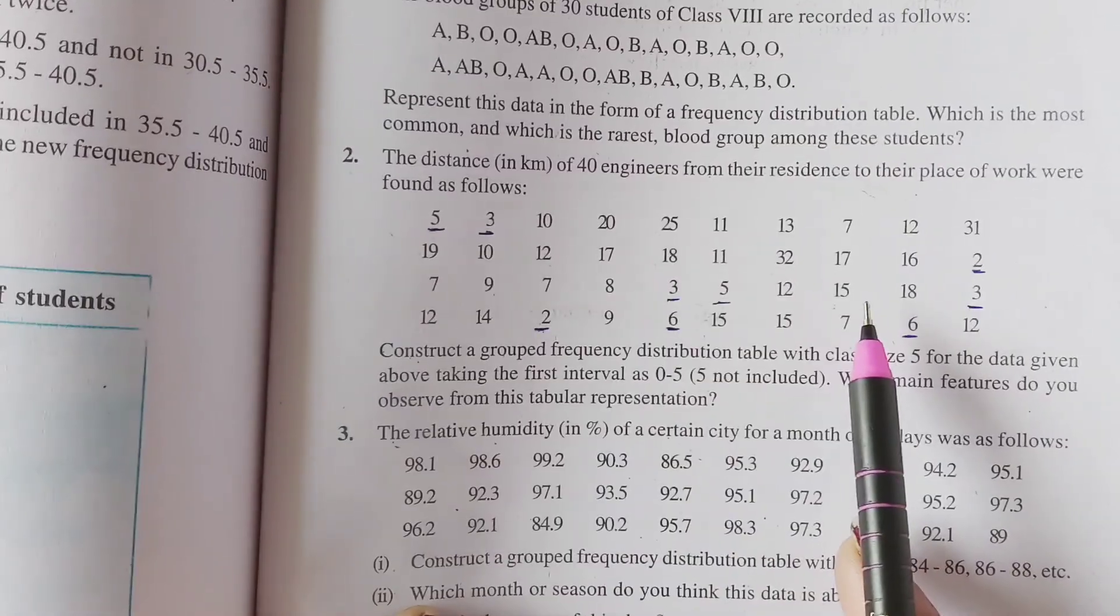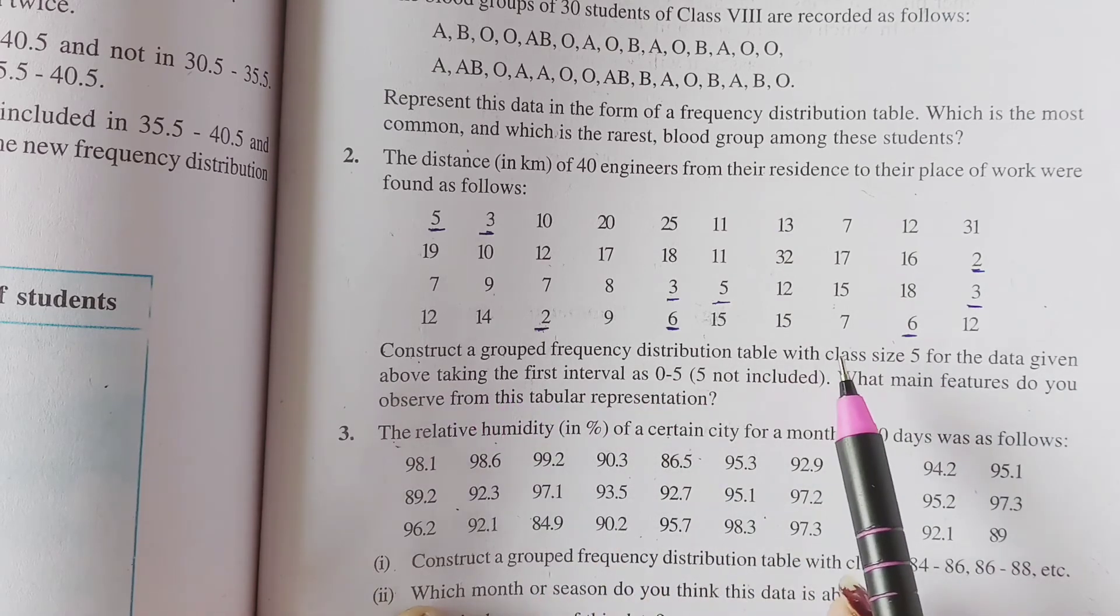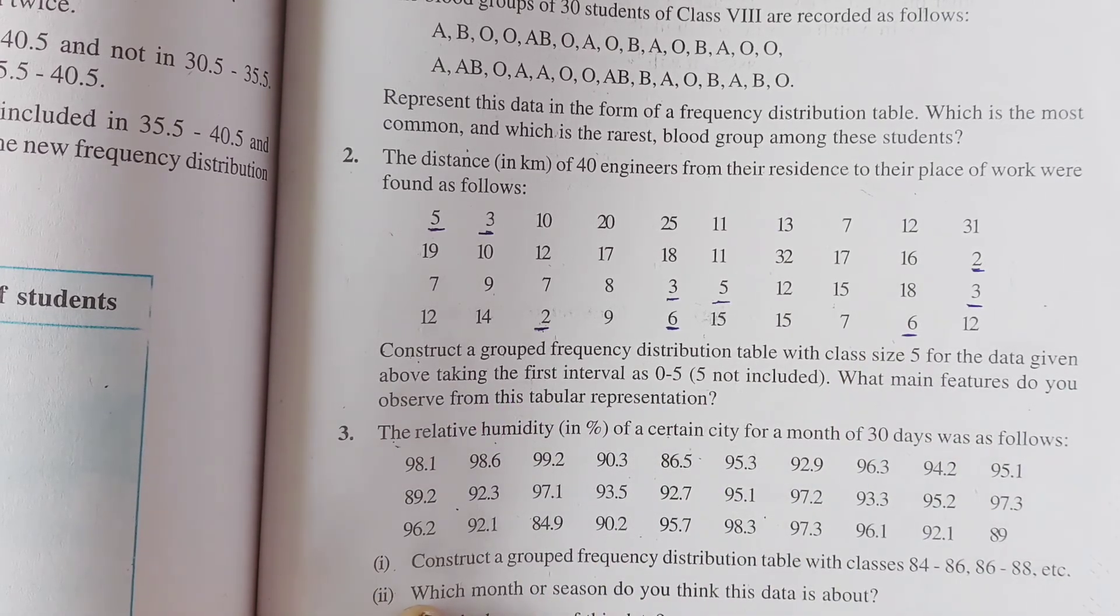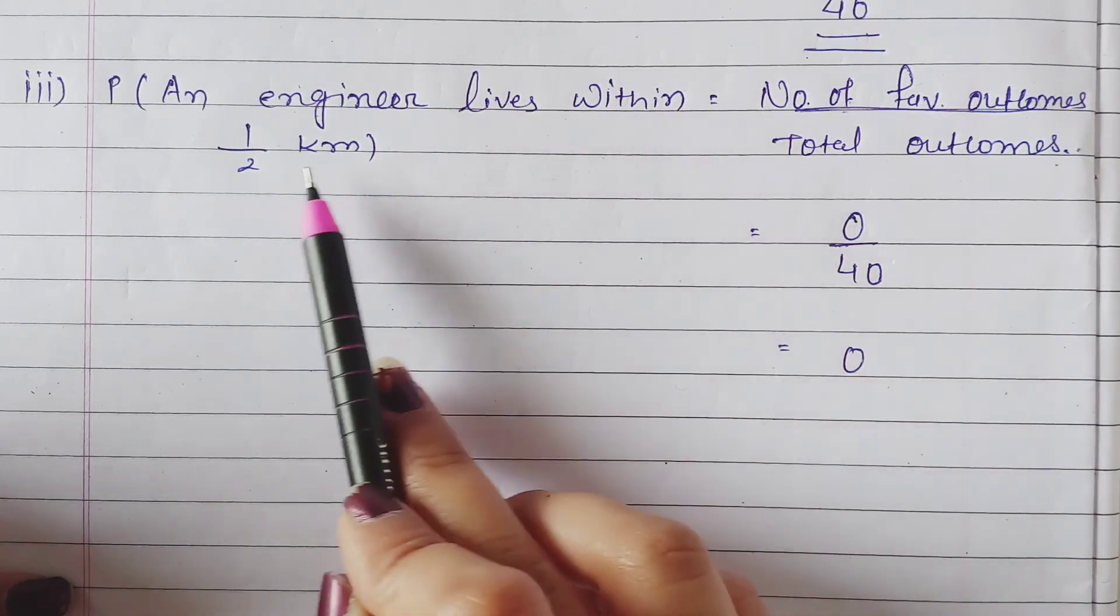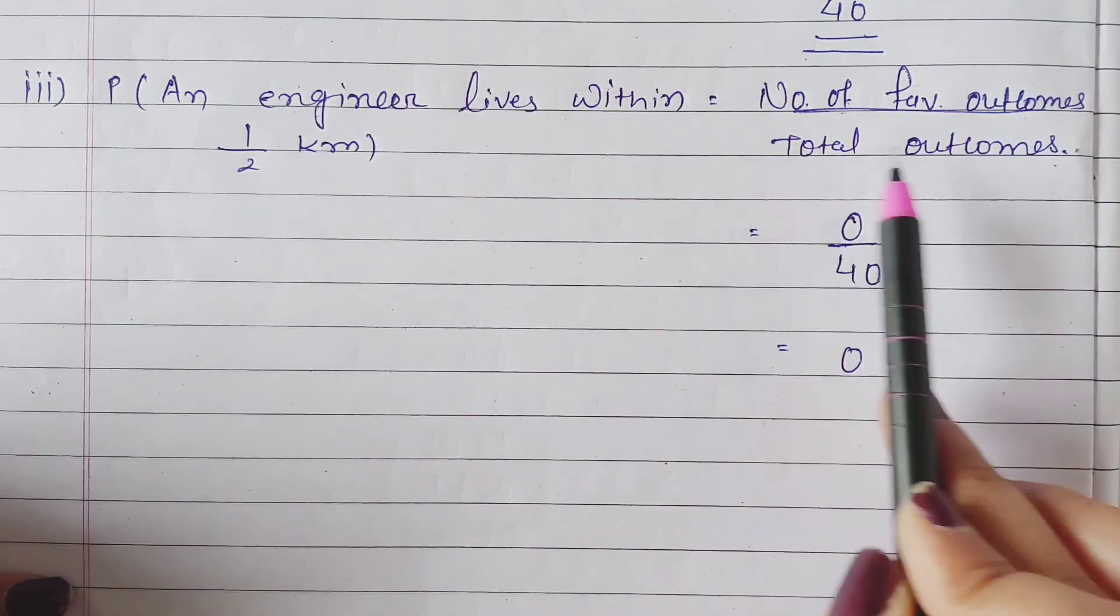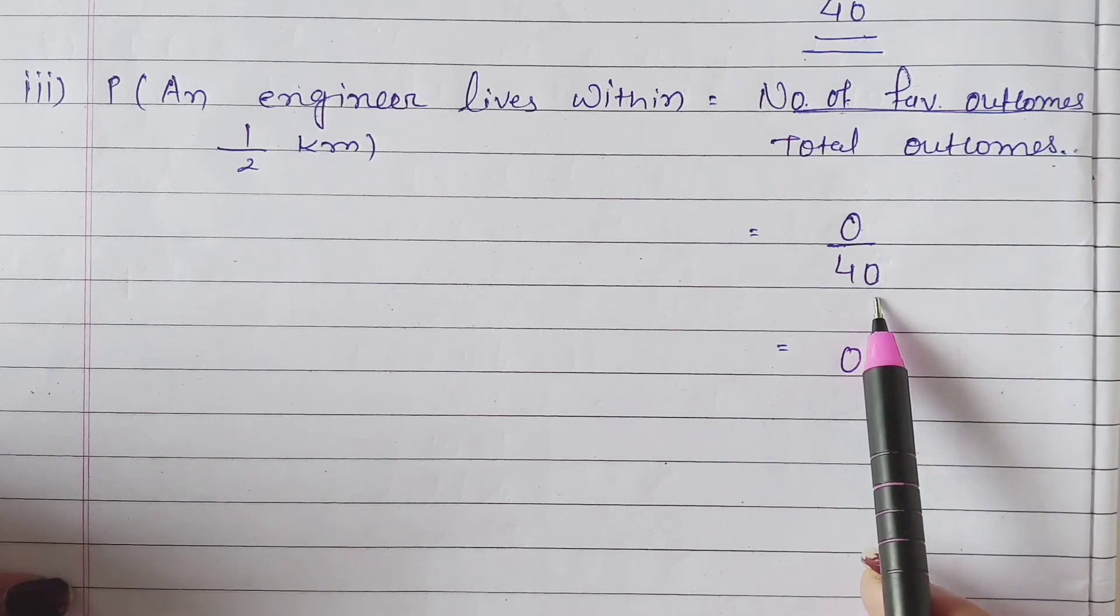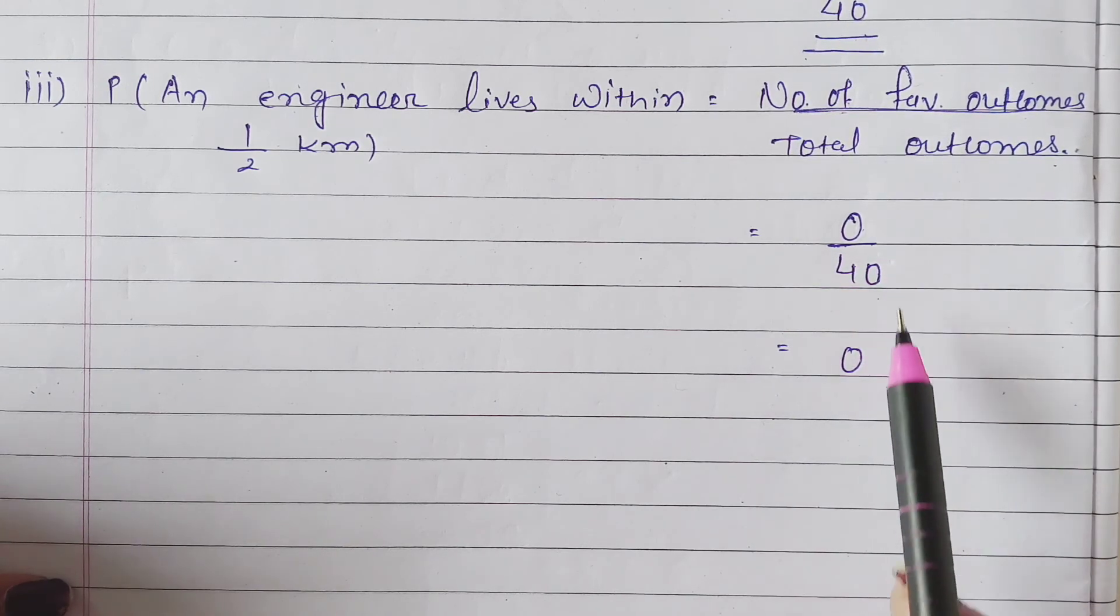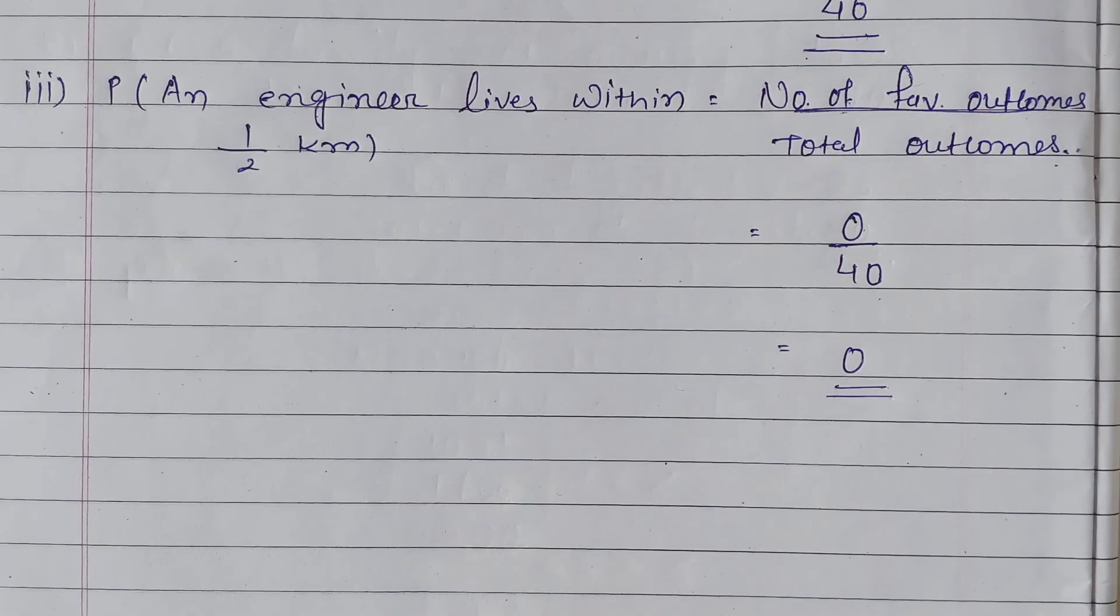In favorable outcomes, how many numbers are written? Zero. Because here there is no engineer whose distance is within half kilometer. So the probability of an engineer lives within half kilometer, that is number of favorable outcomes upon total outcomes. Number of favorable outcomes is 0 and total outcome is 40. 0 divided by 40 is 0. This was the question number 8 of exercise number 15.1.